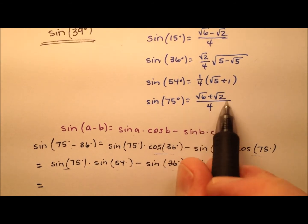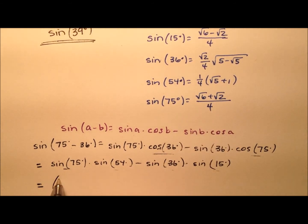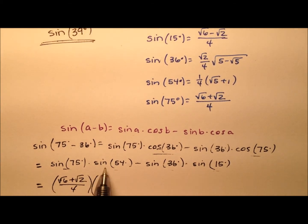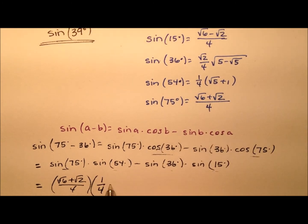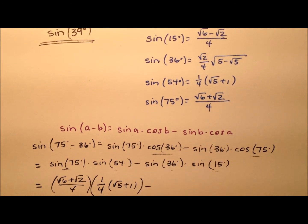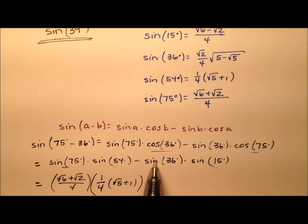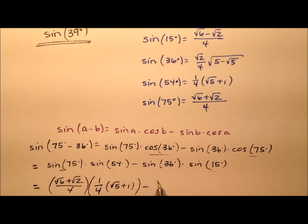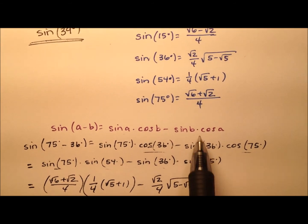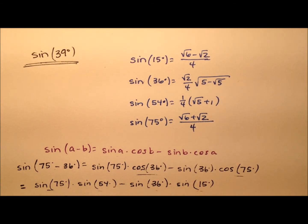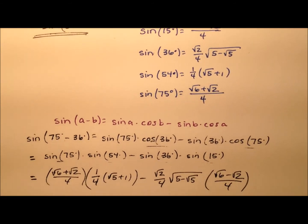So the first one is the sine of 75, which is this value here. So we'll say the square root of 6 plus the square root of 2, all over 4. And we're going to multiply that by the sine of 54, which is 1/4 times the square root of 5 plus 1. Then from that we're subtracting the sine of 15, which is the square root of 6 minus the square root of 2, all over 4.